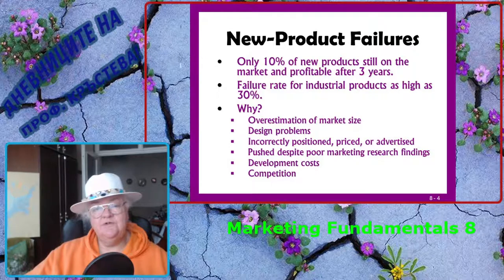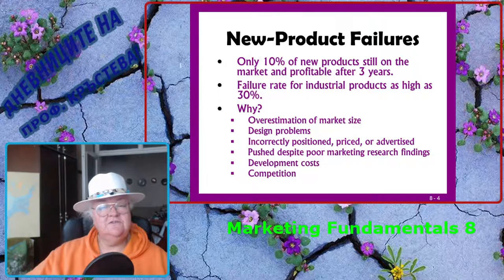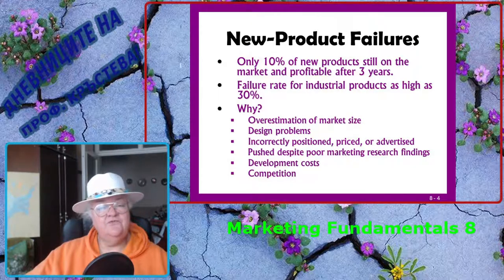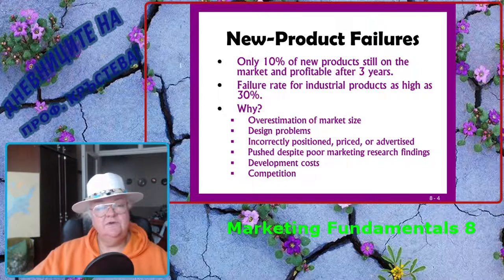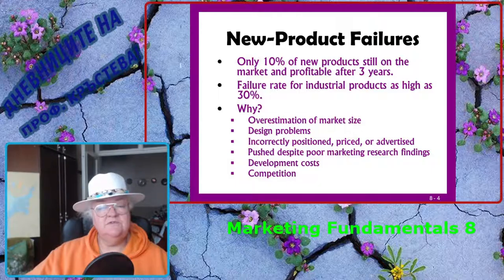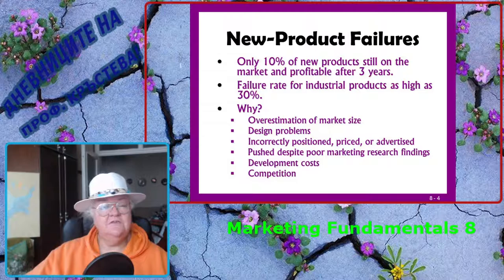There are very important and famous new product failures. Only 10% of new products are still on the market and profitable after three years. The failure rate for industrial products is as high as 30%. Why does this happen? Reasons include overestimation of market size, design problems, incorrectly positioned, priced, or advertised products, products pushed despite poor marketing research findings, and high development costs or competition.